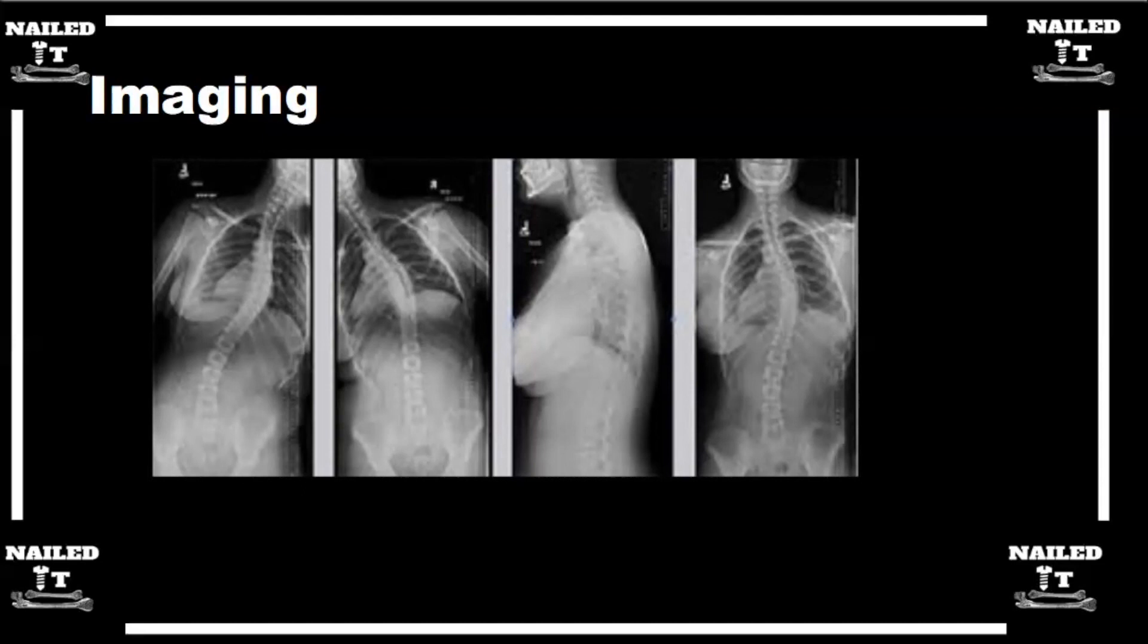Just to highlight some points, these are all high yield. I kept hearing these and I didn't know what these guys are talking about. But again, the structural versus non-structural: if you get a bending film and the curve straightens up, that is going to be a non-structural curve. Versus if you get a bending film and the curve is still the same, that's going to be a structural curve. That's correct.